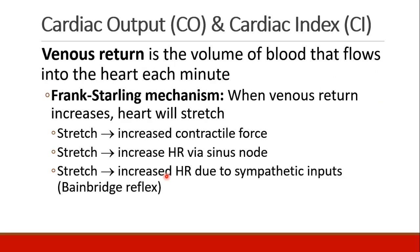We're going to talk about some other concepts related to cardiac output, and the first one is venous return — simply the volume of blood that flows into the heart from the venous system per minute. This introduces us to the Frank-Starling mechanism, which says that when venous return increases, the heart fills more and starts to stretch. This stretching causes the heart muscle to squeeze with increased contractile force, increases heart rate through a mechanism at the sinus node, and increases heart rate due to sympathetic inputs — called the Bainbridge reflex. In general, increasing venous return leads to an increase in cardiac output.